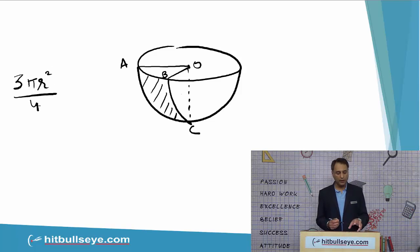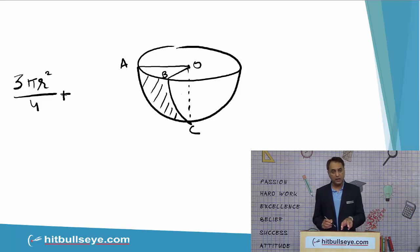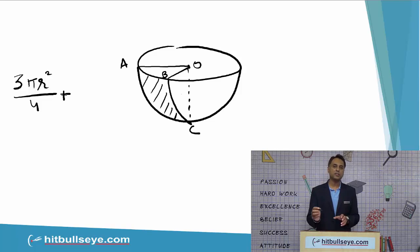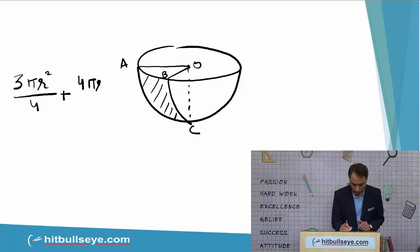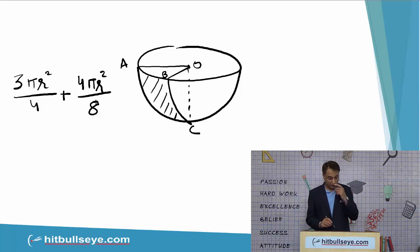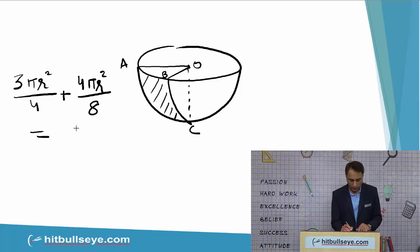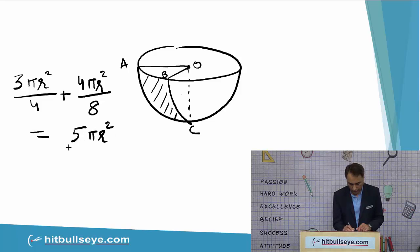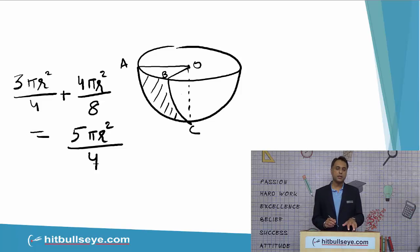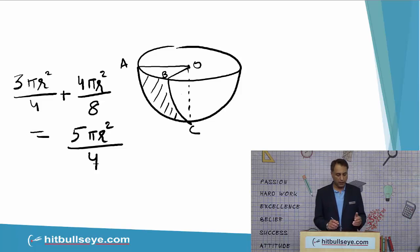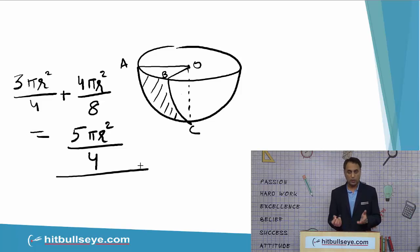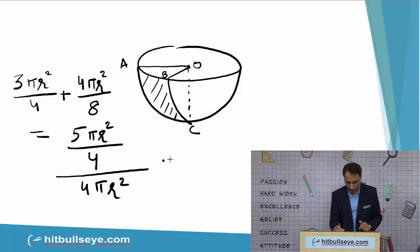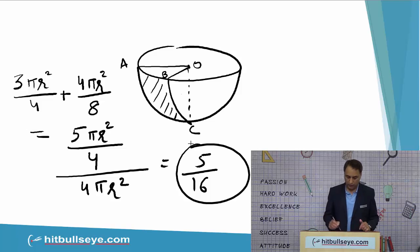To this we add the area of the uncut surface ABC, which is one-eighth the surface area of the sphere. The surface area of a sphere is 4 pi r squared, so one-eighth of that is 4 pi r squared over 8, which is pi r squared over 2. Adding together: 3 pi r squared over 4 plus pi r squared over 2 gives 5 pi r squared over 4 as the total area of one quadrant. Dividing by the total sphere area of 4 pi r squared cancels pi r squared, leaving 5 over 16.